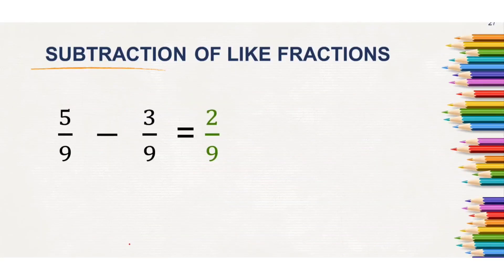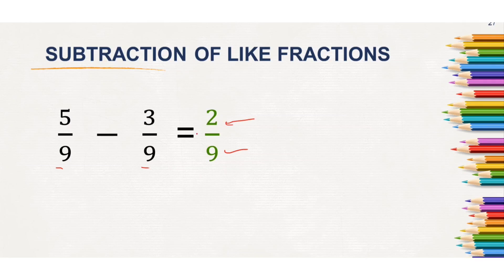Look at some more examples. Here, 5 by 9 minus 3 by 9. The denominators are the same, so the denominator remains the same. The numerators are 5 and 3 — from 5, if you take away 3, 2 will remain. So, 5 by 9 minus 3 by 9 will be 2 by 9.